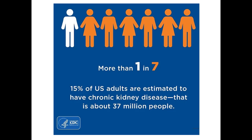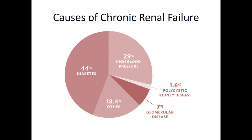As you know, this is very prevalent in our society. Almost 15% of U.S. adults are estimated to have chronic kidney disease at the current time, and this is largely in part due to diabetes. Almost half of the patients with chronic renal failure are due to poorly controlled diabetes. The other almost 30% are due to high blood pressure. The other segment of the population who has kidney disease is usually due to genetic causes or underlying medical problems.